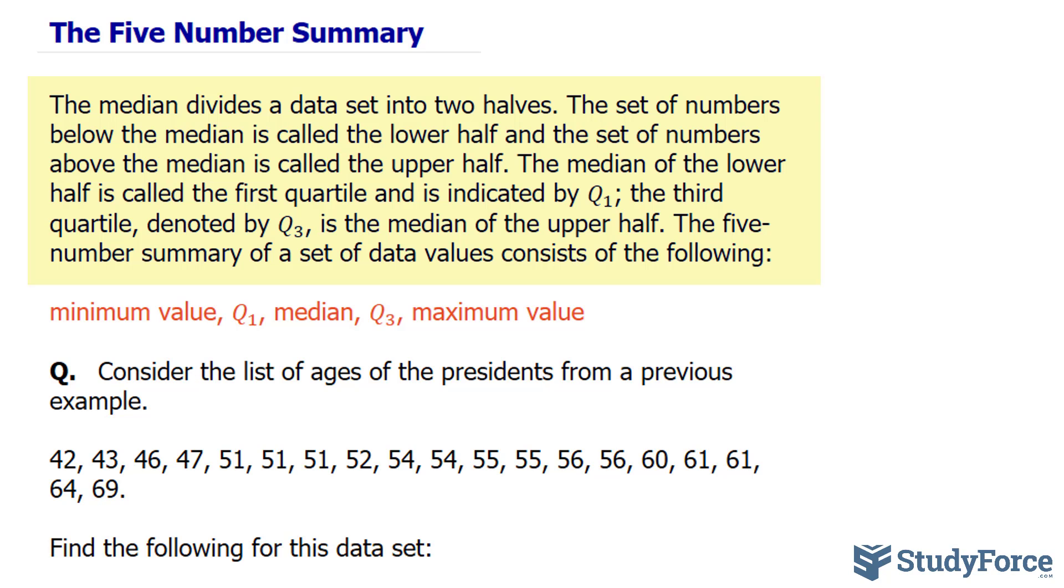The set of numbers below the median is called the lower half, and the set of numbers above the median is called the upper half. The median of the lower half is called the first quartile and is indicated by Q1. The third quartile, denoted by Q3, is the median of the upper half.